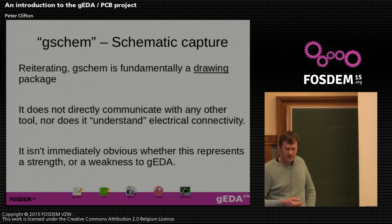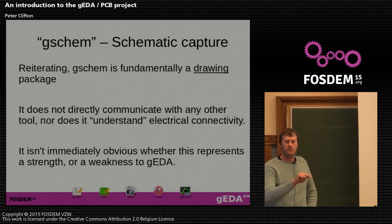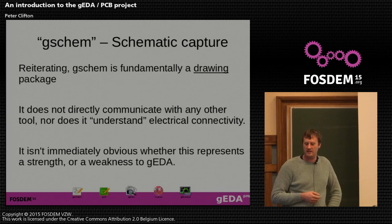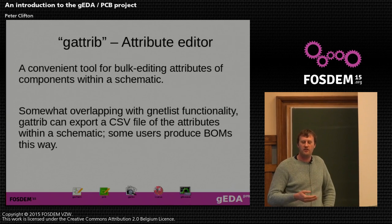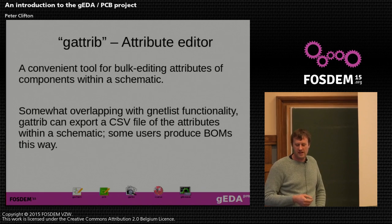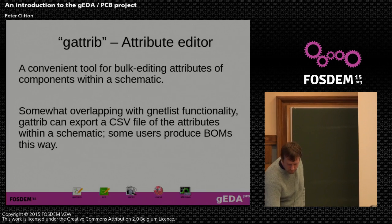The attribute editor is a tool for editing bulk attributes. In proprietary tools the workflow usually involves right-clicking a component, editing properties in a modal dialogue, and repeating for every component. A lot of the work on the G-Schem UI has made dialogues non-modal. The attribute editor goes a step further — you can view all attributes and properties for all components in your schematic in one hit. It looks a little like a spreadsheet, and an old spreadsheet at that.